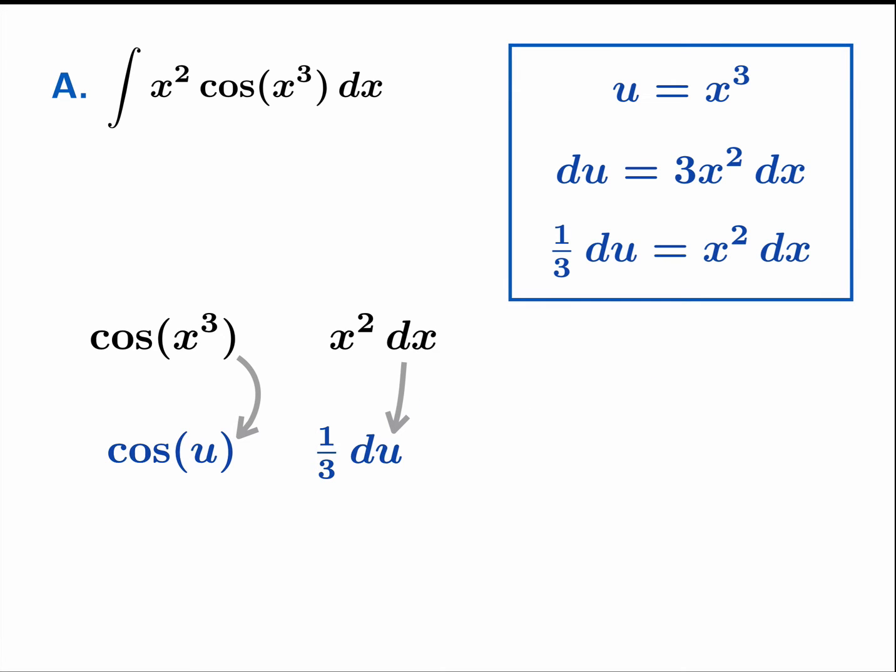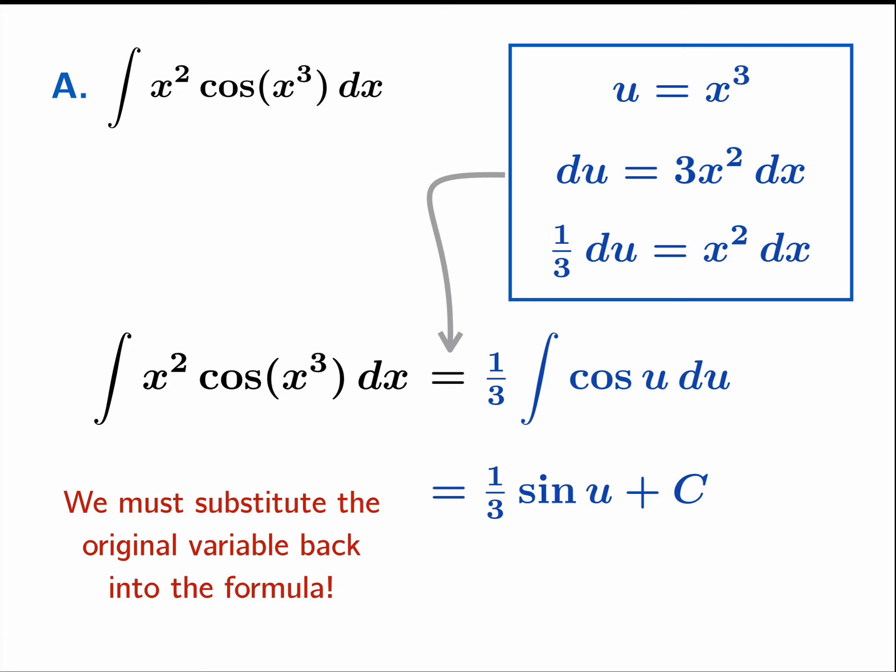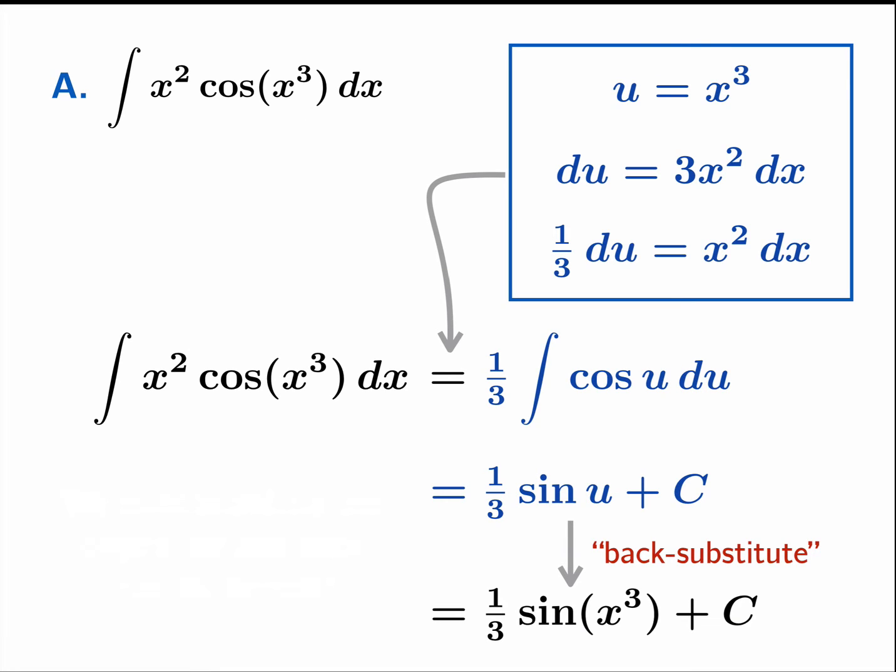So what's happened here is that our substitution, u equals x cubed, has allowed us to rewrite the original integral as one-third the integral cosine u. So here's our original integral, which our substitution has allowed us to rewrite as this simpler integral in terms of u. Of course, the antiderivative of cosine is sine plus our constant of integration. And now we were given a problem in terms of x, so we need to give the answer in terms of x. So we need to substitute the original variable back into the formula, or to use a rather fashionable but inelegant term, back substitute. If we back substitute, we get one-third sine of x cubed plus a constant.